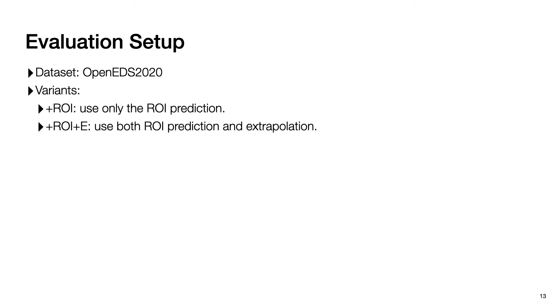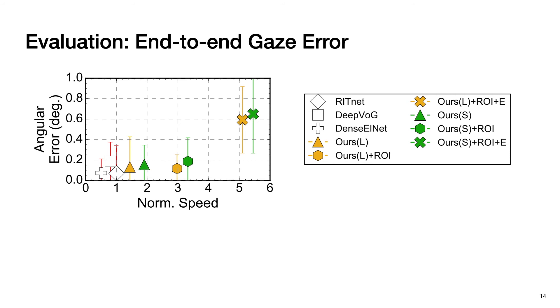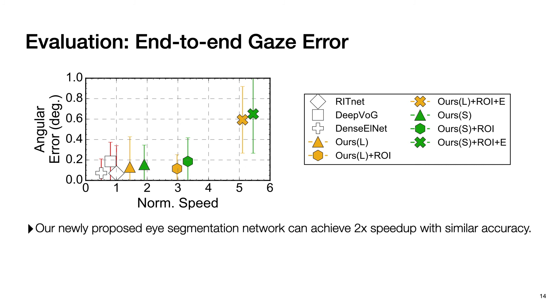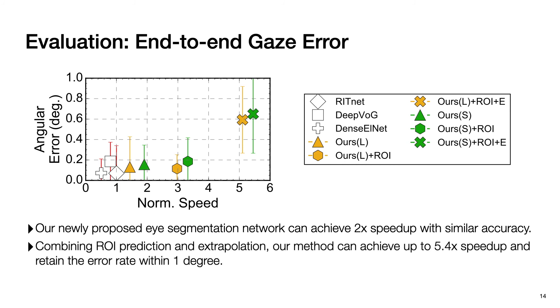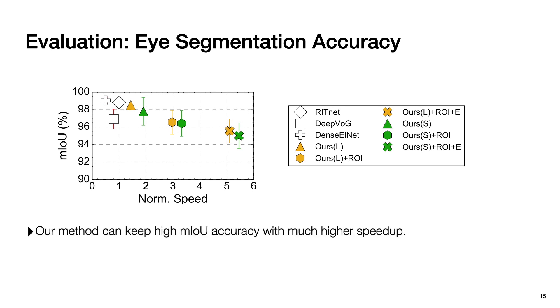In our experiment, we use OpenEDS 2020 for evaluation. We have two variants: the first uses only ROI prediction with no extrapolation, and the second uses both ROI prediction and extrapolation. We compare against three baselines: dense ELnet, deep VOG, and RITnet. Our newly proposed eye segmentation network achieves a 2x speedup with similar accuracy to state-of-the-art networks. By combining ROI prediction and extrapolation, our method achieves up to 5.4x speedup while retaining error within 1 degree. Similar results are seen in eye segmentation evaluation, where our method maintains high mean IOU accuracy with much higher speedup.